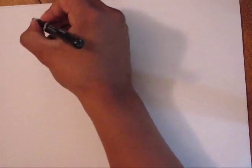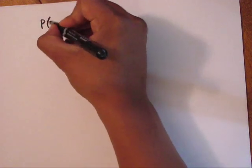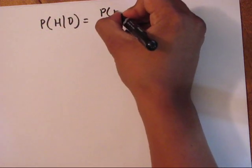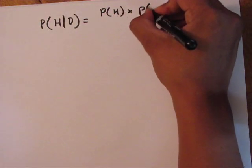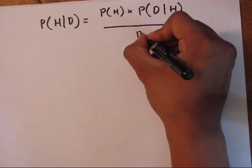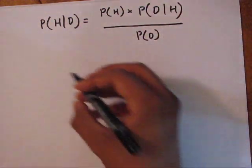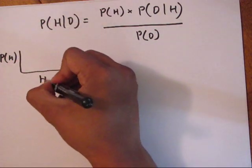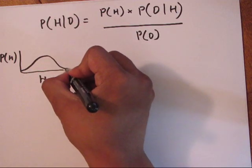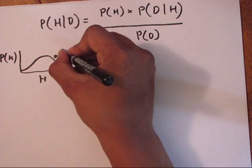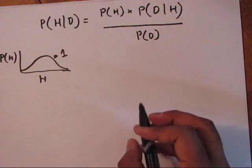Now let's go over the likelihood. Let's rewrite the function so we always know what we're talking about. The probability of hypothesis given some data equals the prior — the probability of hypothesis — times the likelihood, the probability of data given the hypothesis, over the probability of the data. The prior can be represented as a probability distribution over all possible states, and it sums to one.